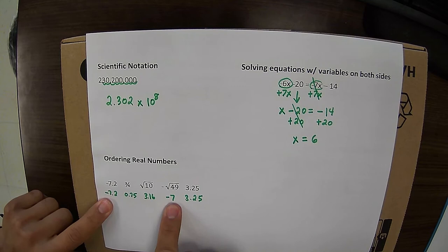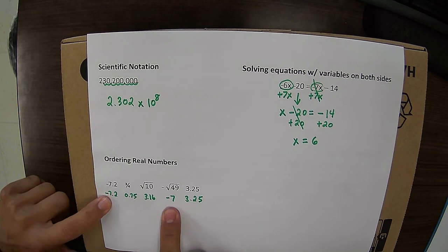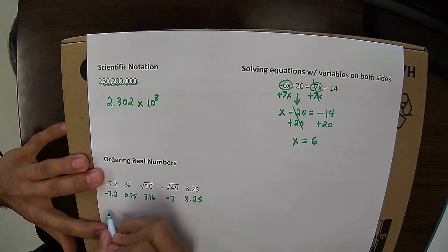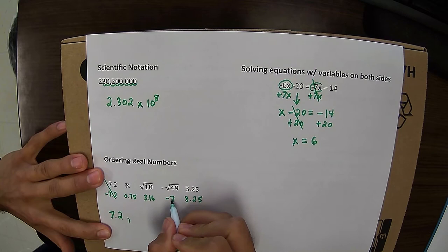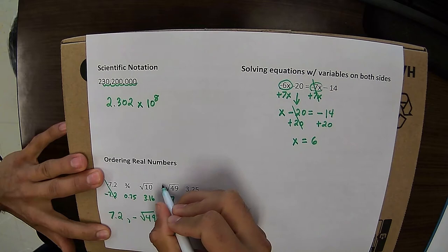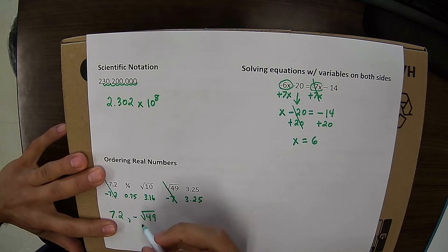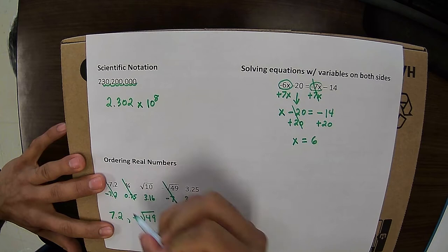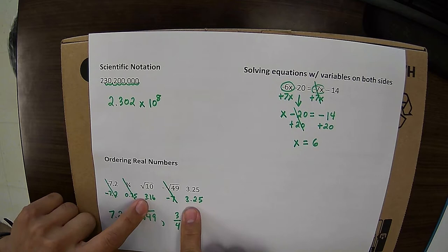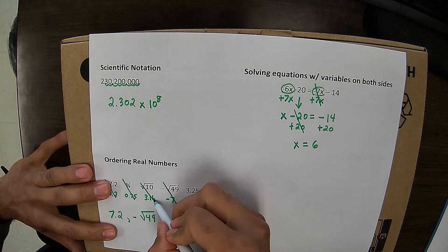So if I look at my two negative values, I know they're going to be my least values. So the smaller one is actually going to be negative 7.2 because negative 7.2 is a little bit lower than negative 7. So I'm going to have negative 7.2. Then instead of negative 7, I'm actually going to put the number, the square root of negative 49. Then I have 3.16 and 3.25. But 3 fourths is going to be lower than both of those because it's just a decimal. So 3 fourths. Then if I look at my two decimals, lower one is going to be 3.16, which is square root of 10. Then my final number would be 3.25.